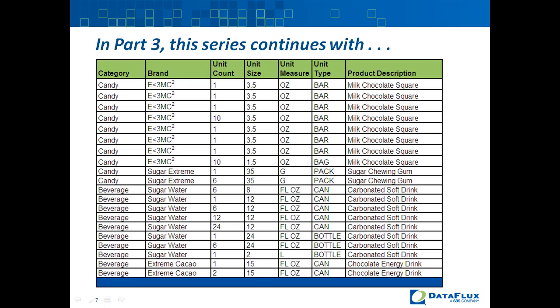In part three of this series, we'll go down to the next level and see how within each category we can further divide and conquer the product description field by breaking it down and creating a fully standardized structure — with addressability to each individual element inside the product description and assignment of standard values. Stay tuned for part three, which will cover standardization as the next critical step in improving product data quality.